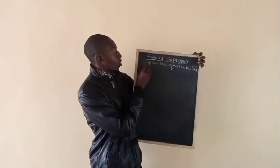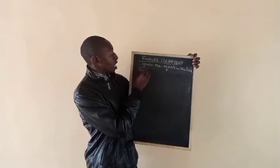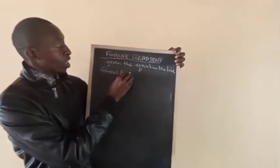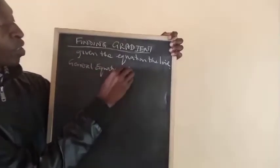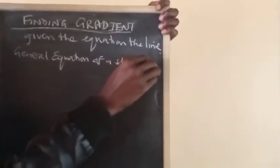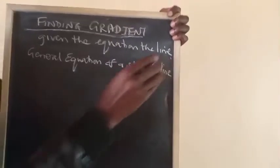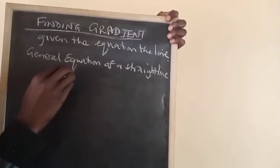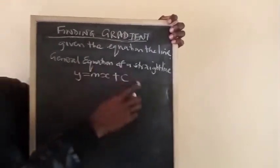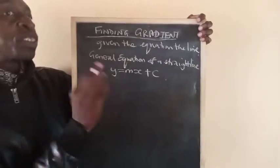Tuna kutaka chanyora kuti general equation. General equation of a straight line.